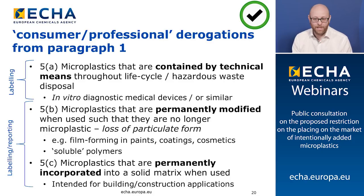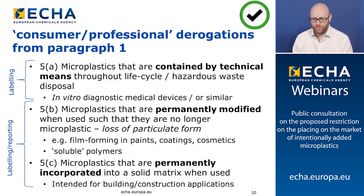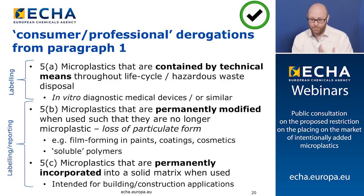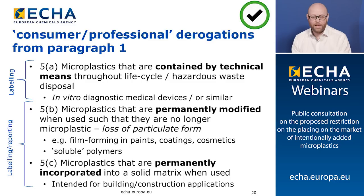Derogation 5b covers microplastics that are permanently modified when used such that they're no longer microplastics — there would be no release of microplastics because they lose their particulate form at the point of use. This applies at the professional-use stage, not industrial sites. What we're thinking of here is film-forming in paints, coatings, and cosmetics — microplastics don't exist after the film is formed. Soluble polymers also fall within this derogation.